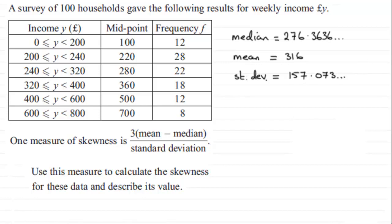So, it's just a simple case of substituting these values into the formula, but it's also interpreting the result that we get. So, when it comes to working out that skewness, we've got three times the mean, which is 316, minus the median, which is 276.3636 and so on. Then all of this is divided by the standard deviation, which is 157.073 and so on. Work this out and what you get is 0.7570 and so on.